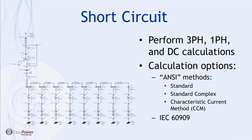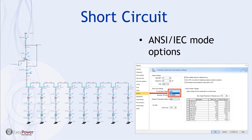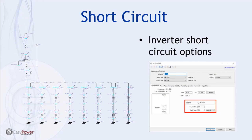You can also switch to the IEC 60909 method. You select between ANSI and IEC methods in the system options tab, which also has other program control selections. For solar facilities in particular, the inverters are a source of short circuit currents that you'd like to model with some degree of accuracy.